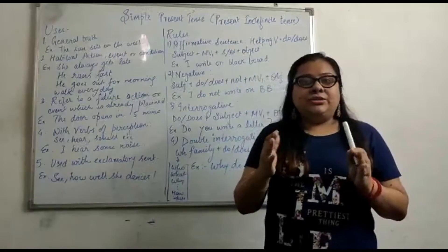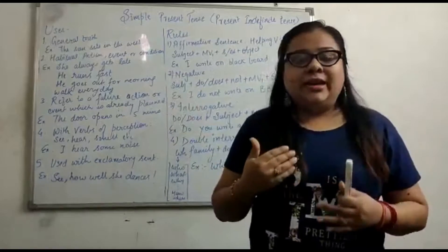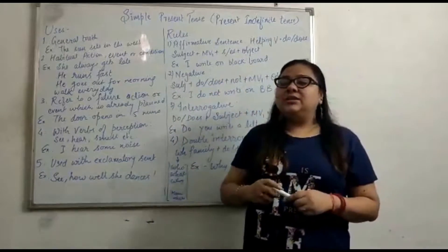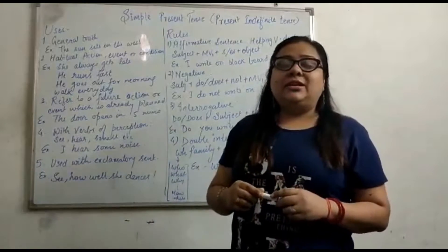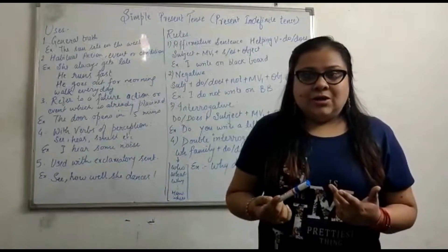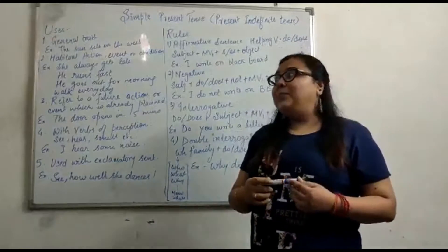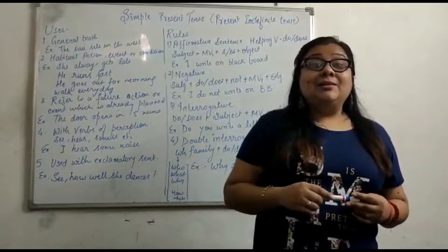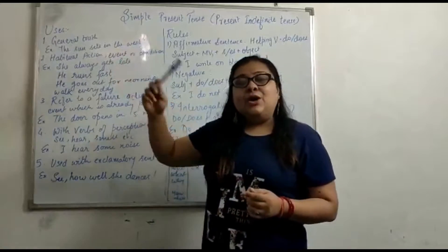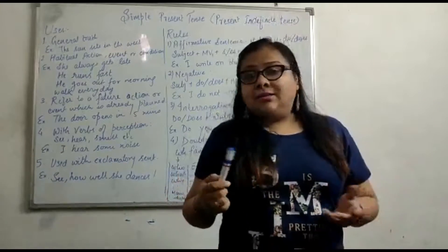First of all, I want to tell you which are the cases in which these types of sentences are being used. These sentences find their application mostly while speaking about general truths. For example: the sun rises in the east, the sun sets in the west, and the moon revolves around the earth.